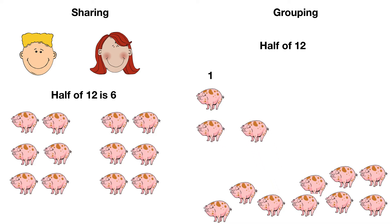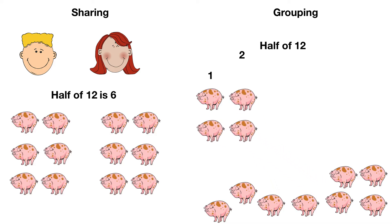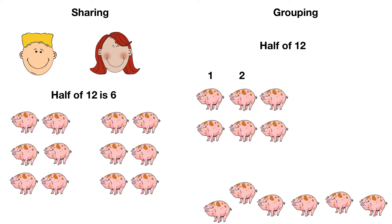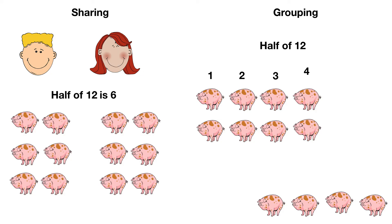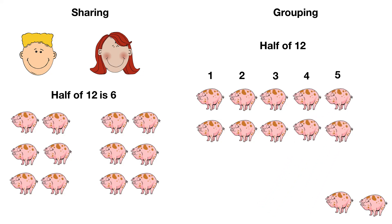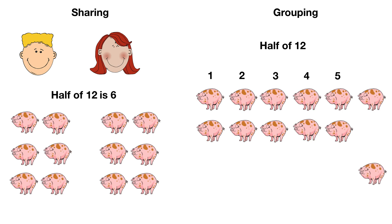One group of two, two groups of two, three groups of two, four groups of two, five groups of two, six groups of two. So half of twelve is six.